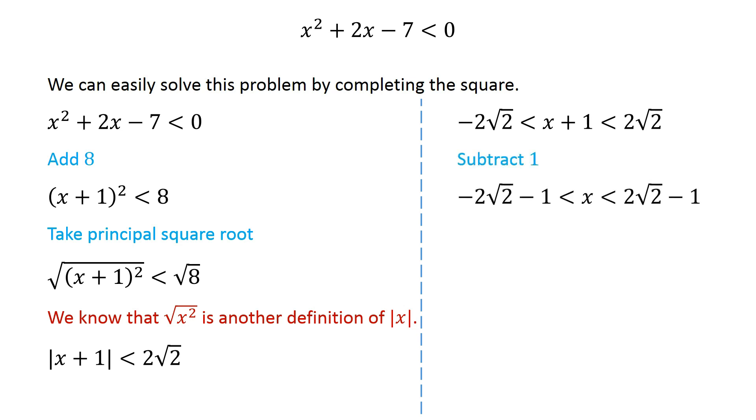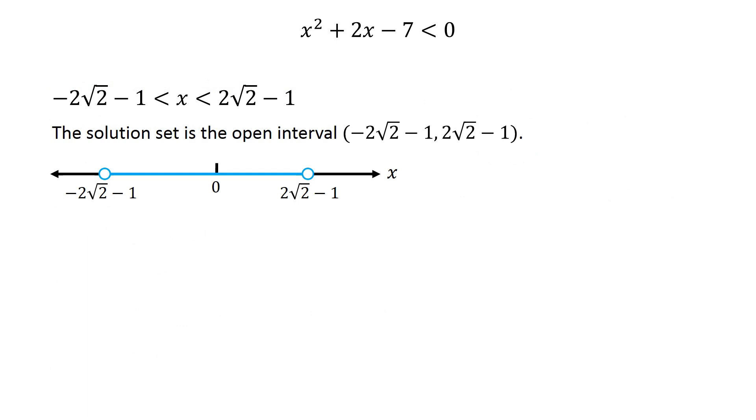Subtracting 1 from all parts, we get negative 2 times square root of 2 minus 1 is less than x, which is less than 2 times square root of 2 minus 1. Thus the solution set of this inequality is the open interval from negative 2 times square root of 2 minus 1, to 2 times square root of 2 minus 1. Thank you.